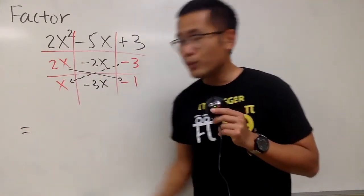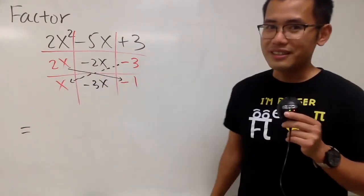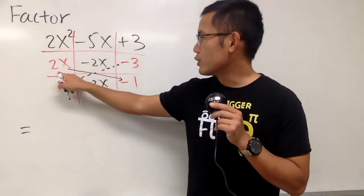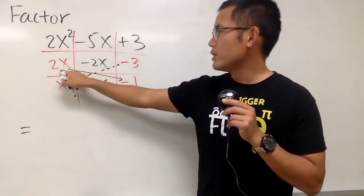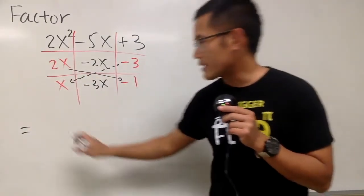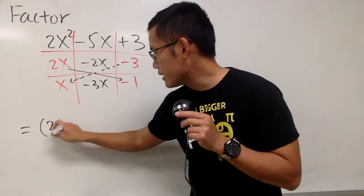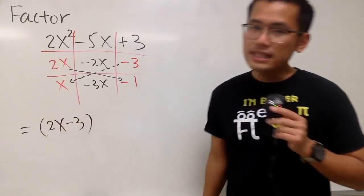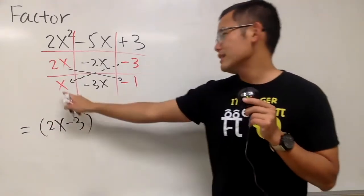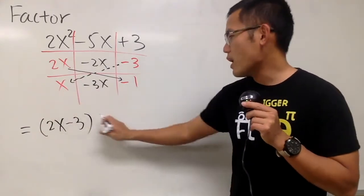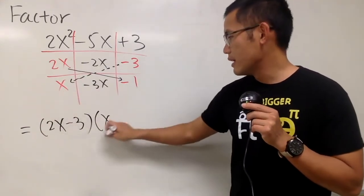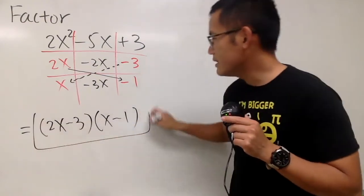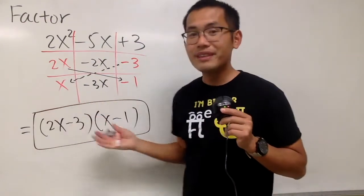So finally, we can write down the answer. When factoring, you just go across. 2x minus 3 is the first factor. And the second factor is x minus 1. This right here is it.